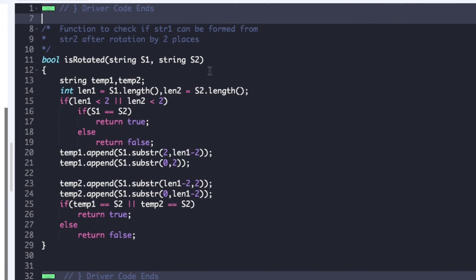So as we have seen in the explanation part we create two temporary strings namely temp1 and temp2 and store the lengths of s1 and s2 in the variables length1 and length2.